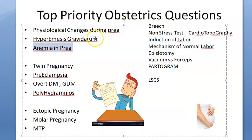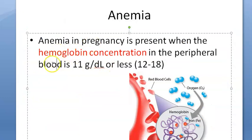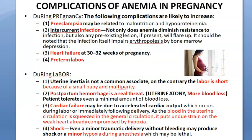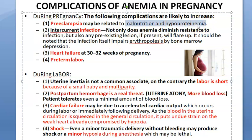Anemia in pregnancy means hemoglobin concentration less than 11. Complications of anemia include preeclampsia, infections, heart failure, preterm labor, postpartum hemorrhage — she has no hemoglobin and is going into hemorrhage. She can also go into cardiac failure because the heart is already in a high-output state, and now she is pushing through labor. She is prone to infections. The baby will be small.